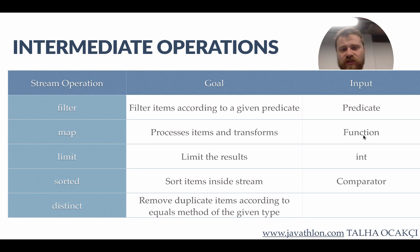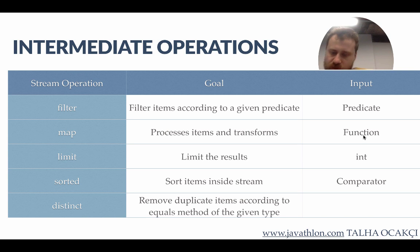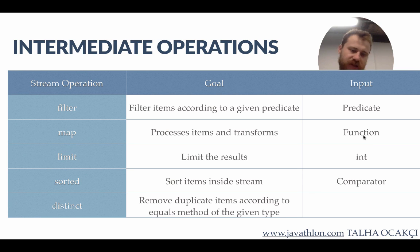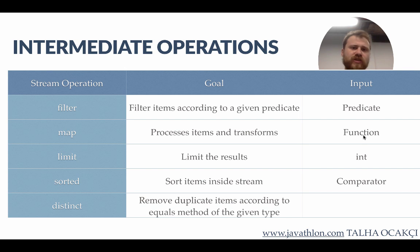The input of the limit function is an integer because we limit by a number. The other stream method is sorted — it simply sorts the items inside the stream while they are flowing, using a comparator. The other method is distinct — it removes duplicate items according to the equals method of the given type, so while items are flowing inside the stream, when we reach a duplicate item it is automatically eliminated and the stream continues flowing.